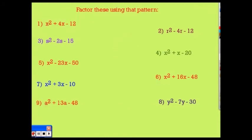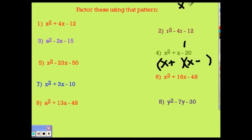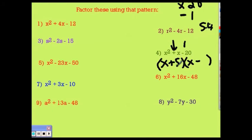Number 4: this minus sign tells me I need different signs, so I'll put a plus and a minus. I'm looking for two numbers that multiply to 20 and since my signs are different, subtract to give me 1. That sounds like 5 and 4. Since my middle term needs to end up being a positive 1x, I put the big number — 5 — with the positive. So it's (x+5)(x-4). If you don't believe me, multiply these out and you'll get the original problem.